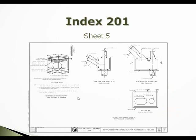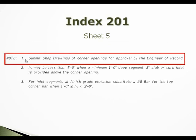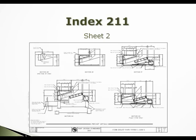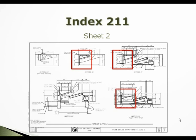Also in index 201, we go to sheet 205. We added the highlighted note for the corner cut. The note reads: shop drawings of corner openings for approval by the engineer of record. In index 211, sheet 2, you will see the highlighted details that have changed.